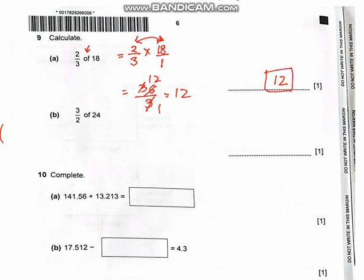The second part is 3/2 of 24. So it is 3/2 times 24/1. Using the same method: 3 times 24 is 72, and the denominator is 2. Simplifying: 72 divided by 2 is 36. So the answer is 36.